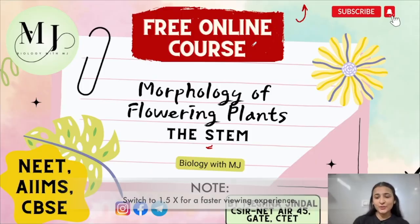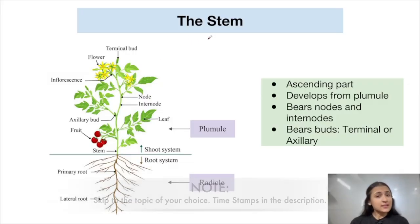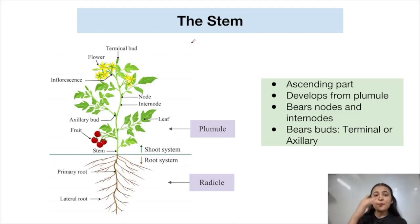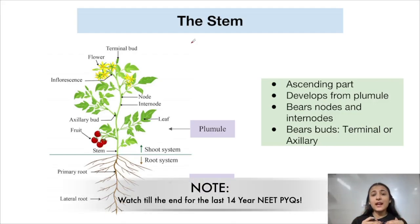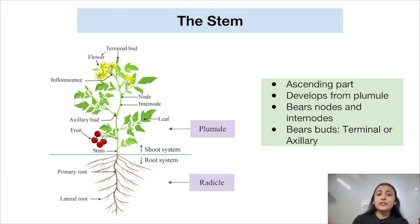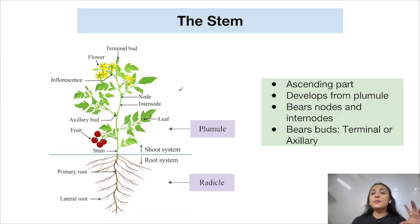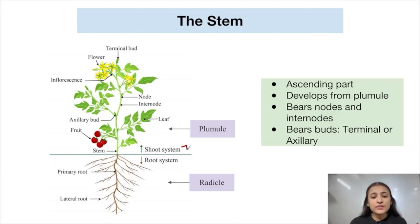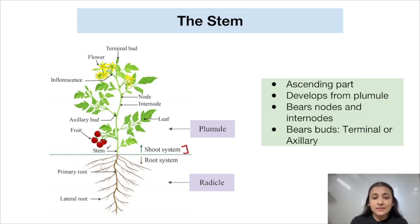So what is the stem? The stem is the ascending part of a plant — the ascending part that we see above the ground. It comprises the shoot system of the plant. The shoot system comprises the stem, the leaves, the branches, the flowers, the inflorescence, and the fruits. Everything we see above the ground level comprises the shoot system of the plant.